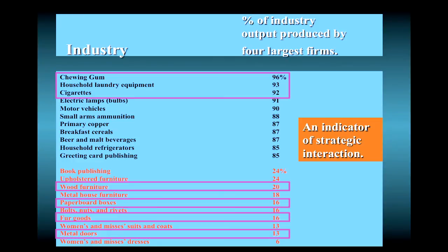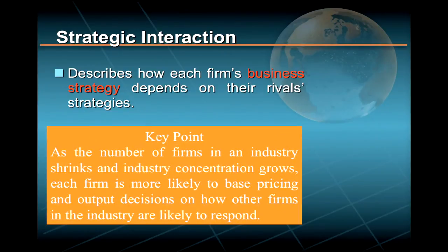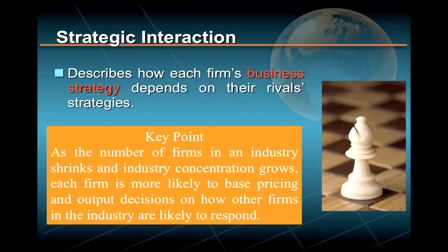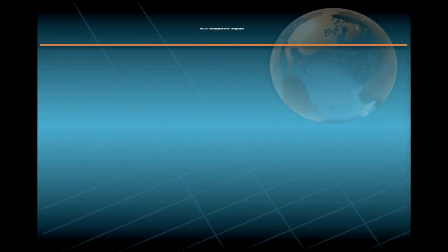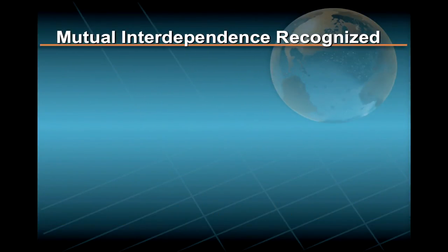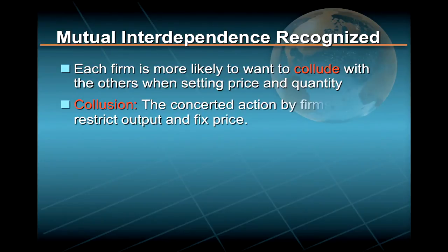The reason concentration ratios are so important in studying market structure is that they help serve as an indicator of the degree of strategic interaction that might occur in an industry. Strategic interaction describes how each firm's business strategy depends on their rival's strategy. As the number of firms shrinks and industry concentration grows, each firm is more likely to base pricing and output decisions on how other firms are likely to respond, and more likely to want to collude — where collusion is defined as the concerted action by firms to restrict output and fix price.